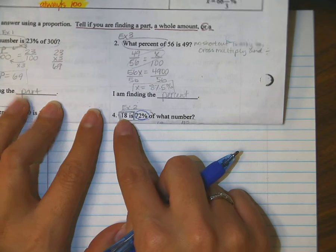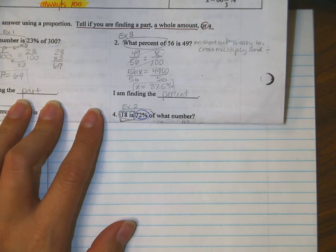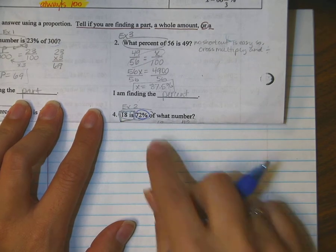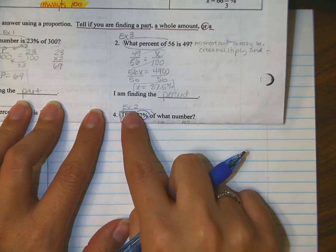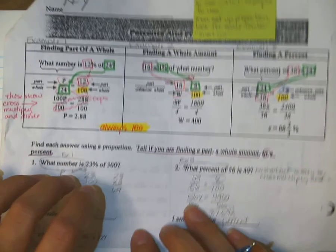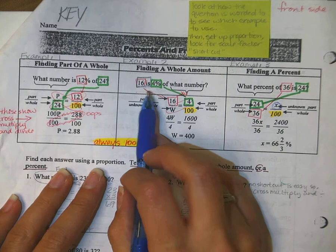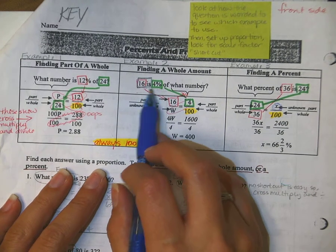Okay, so we're looking at number four. Number four says 18 is 72% of what number? So I've already decided that this looks like example two, do we agree? And the reason it looks like example two is because it matches the same format.